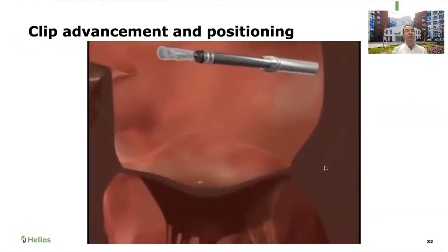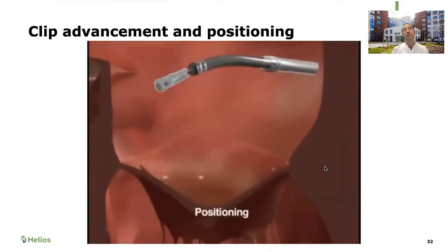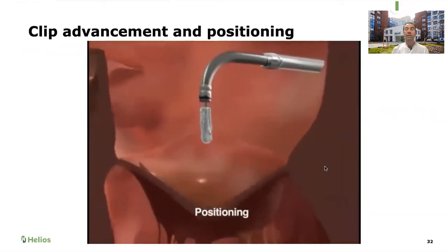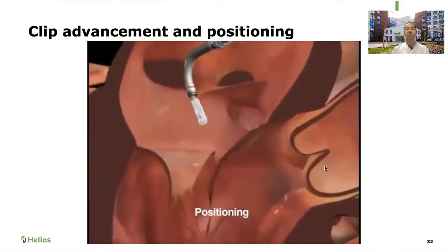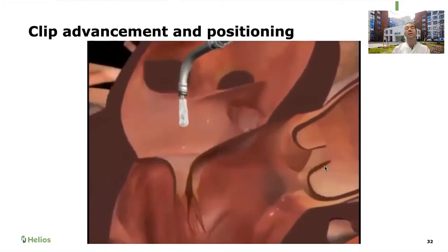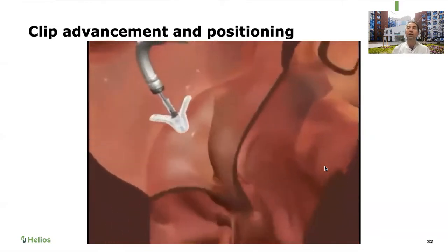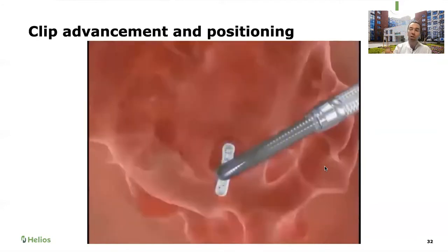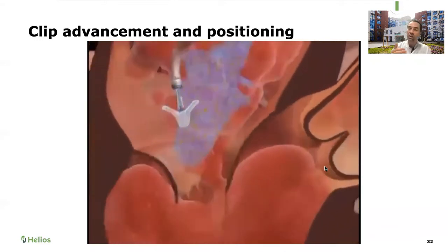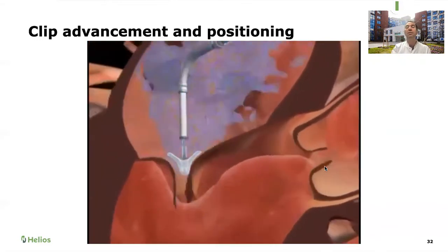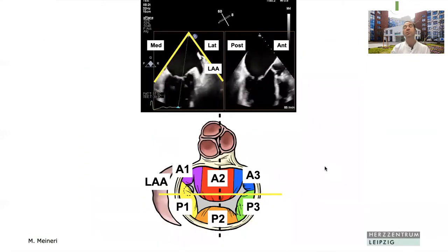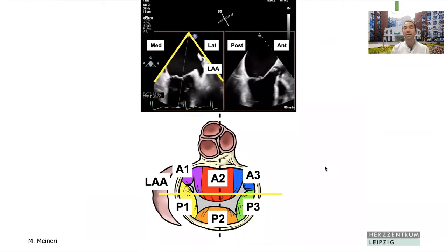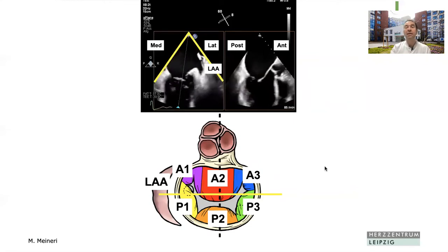The second step is the advancement of the clip. The clip comes up bent down, and we position it where we think the defect and jet are coming from. We can move the clip anterior, posterior, lateral, and medial. The clip is open and positioned perpendicular to the valve opening. We then do clocking — rotating the clip — so it falls right perpendicular to the commissure. We typically use the mitral commissural view with X-Plane for guidance: the commissural view guides lateral and medial positioning, and the derived X-Plane guides anterior and posterior.